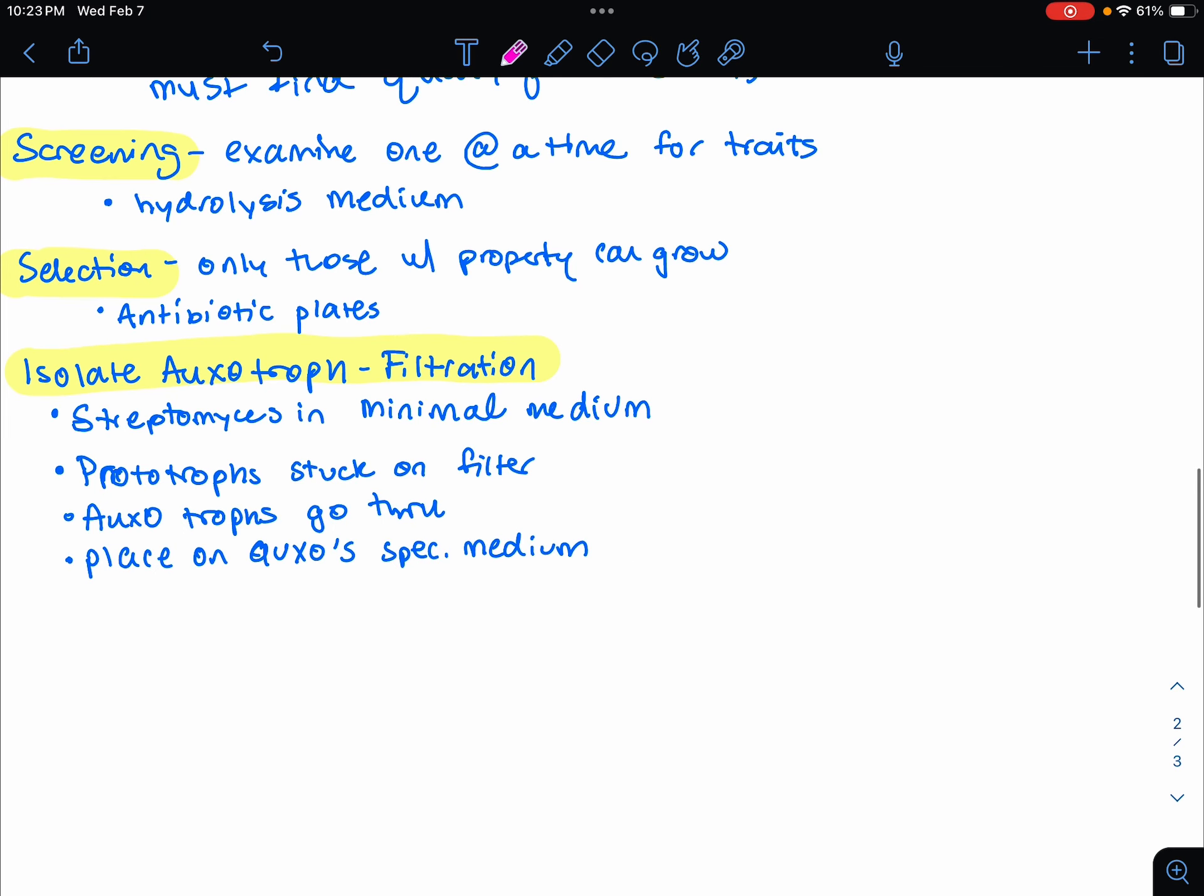Screening and selection, the difference between those two terms. Screening is when you're going to examine one at a time for traits. This is like using the hydrolysis medium. However, selection means only cells with certain properties are allowed to grow out of a population of millions. An example would be the antibiotic plates. Only cells that contain a plasmid with the antibiotic resistance gene could grow on antibiotic-containing plates. Selection is more efficient in screening as larger numbers of cells can be examined.